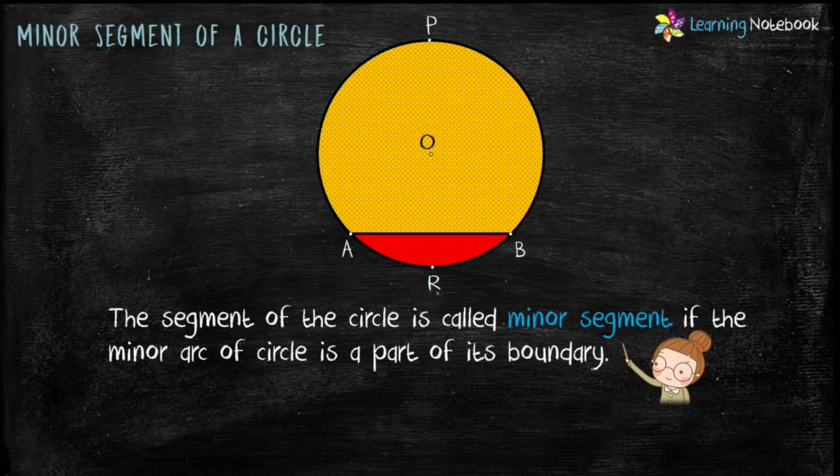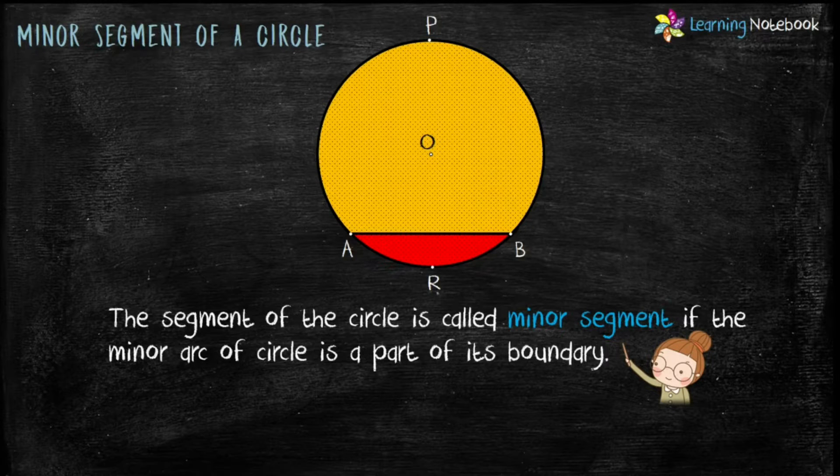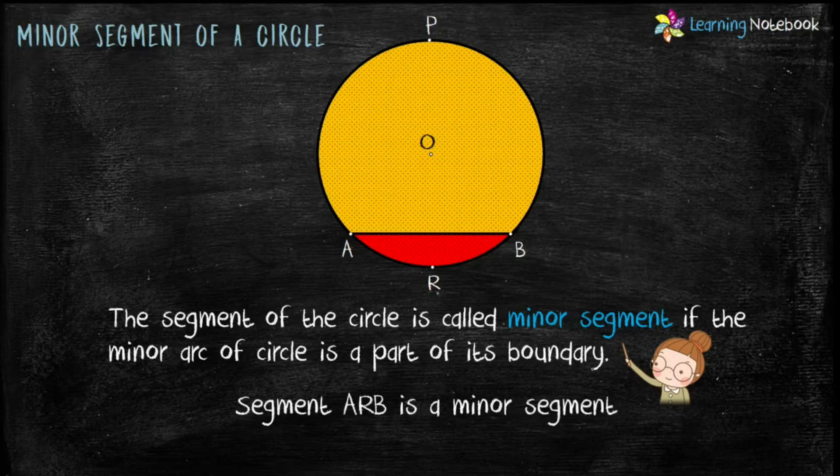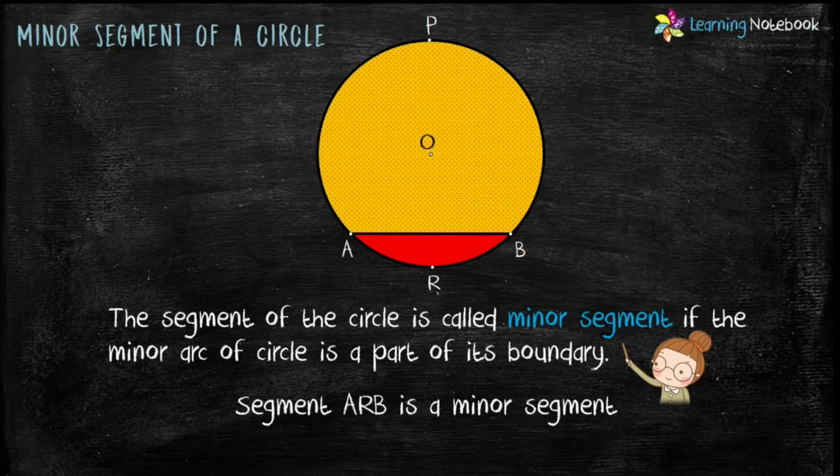So students, the segment of the circle is called minor segment if the minor arc of circle is a part of its boundary. Like here, in this circle, segment ARB is a minor segment because minor arc ARB is a part of its boundary.